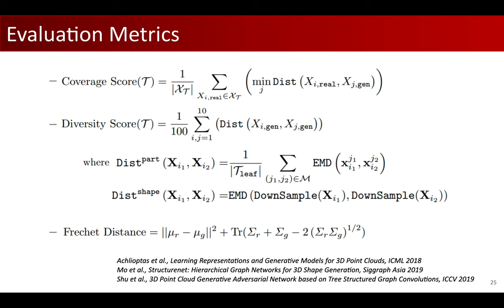We adapt the standard evaluation metrics proposed in the previous 3D point cloud GAN works, such as the coverage scores, the diversity scores, and the Fréchet distance. For each of these metrics, we evaluate not only at the global shape level, but also at the part level, in order to measure more faithfully for the shape part and structure generation.